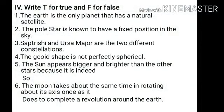We are going to see true or false. First one: the Earth is the only planet that has a natural satellite — false. Second one: the pole star is known to have a fixed position in the sky — true. Third one: Saptarishi and Ursa Major are two different constellations — false.